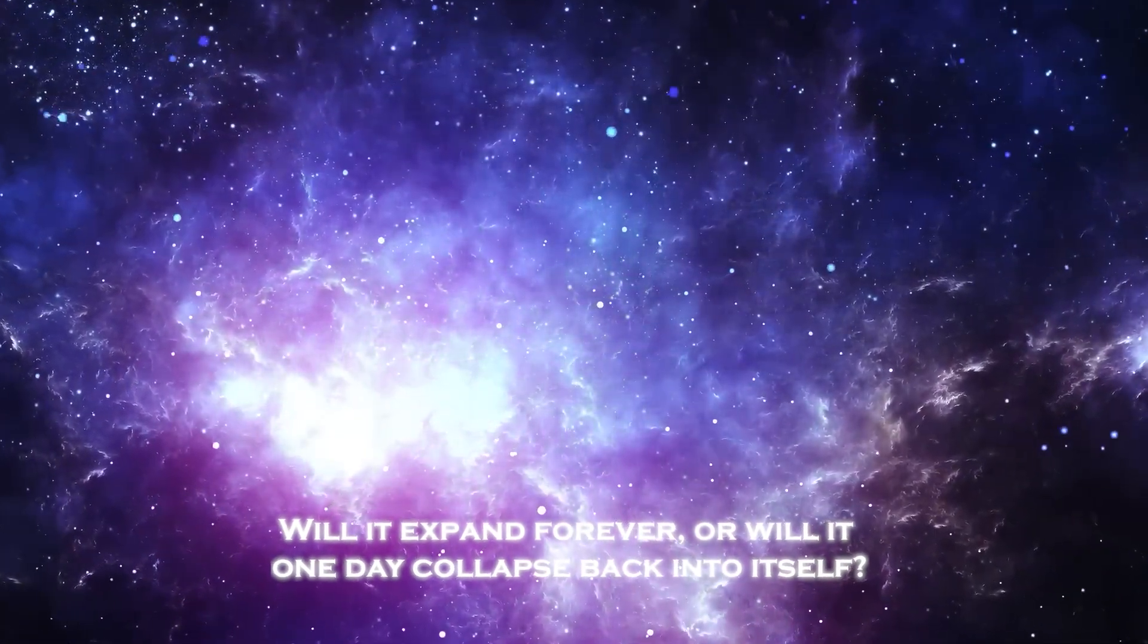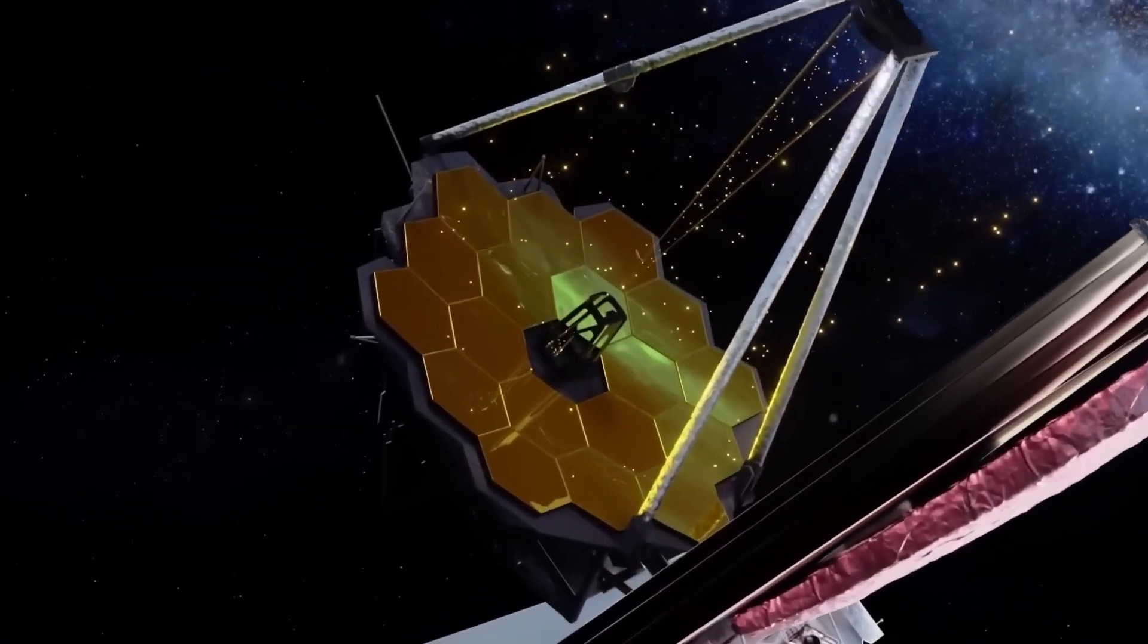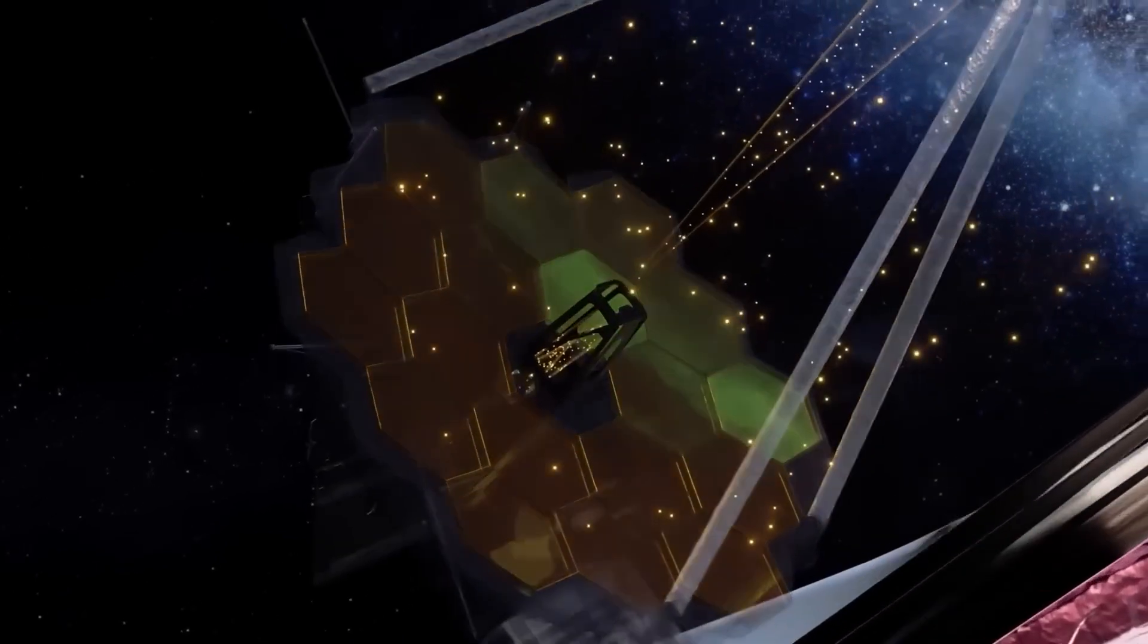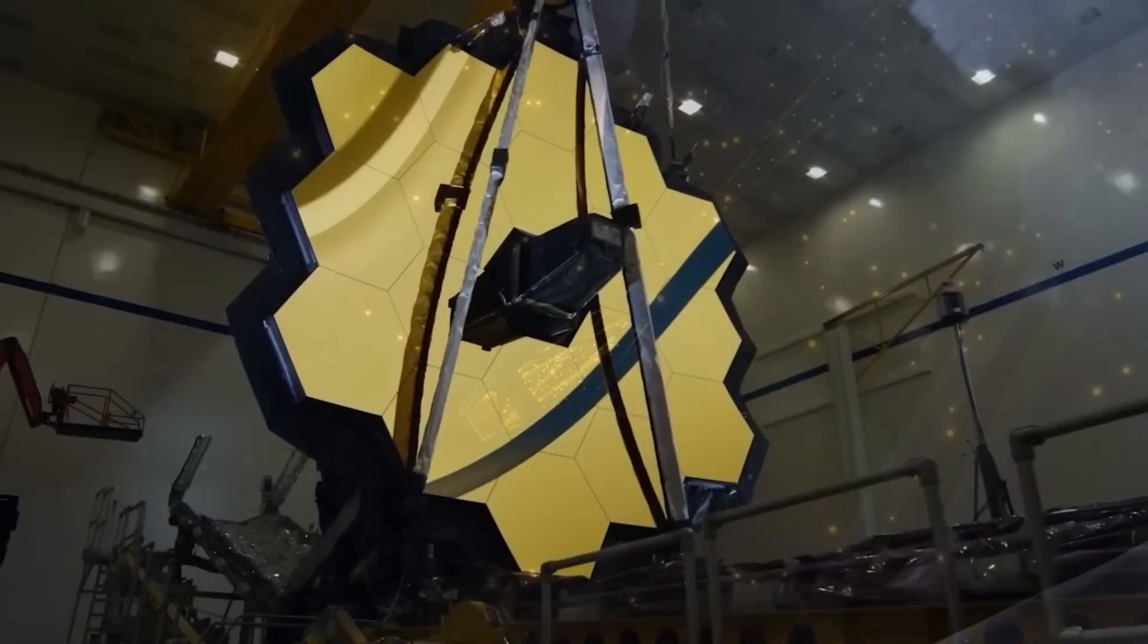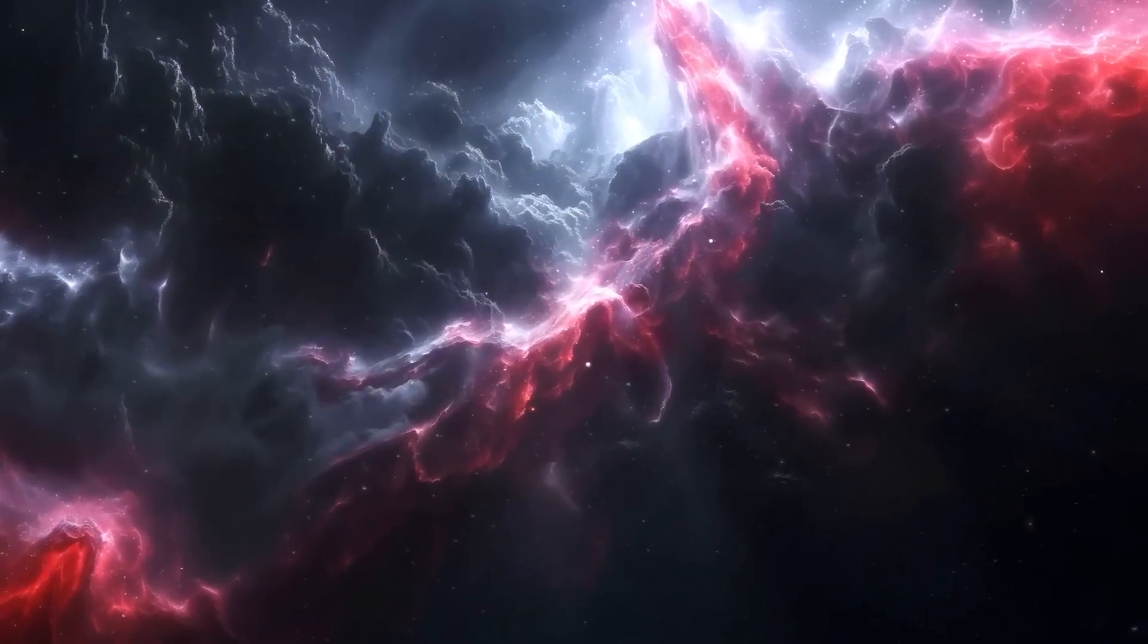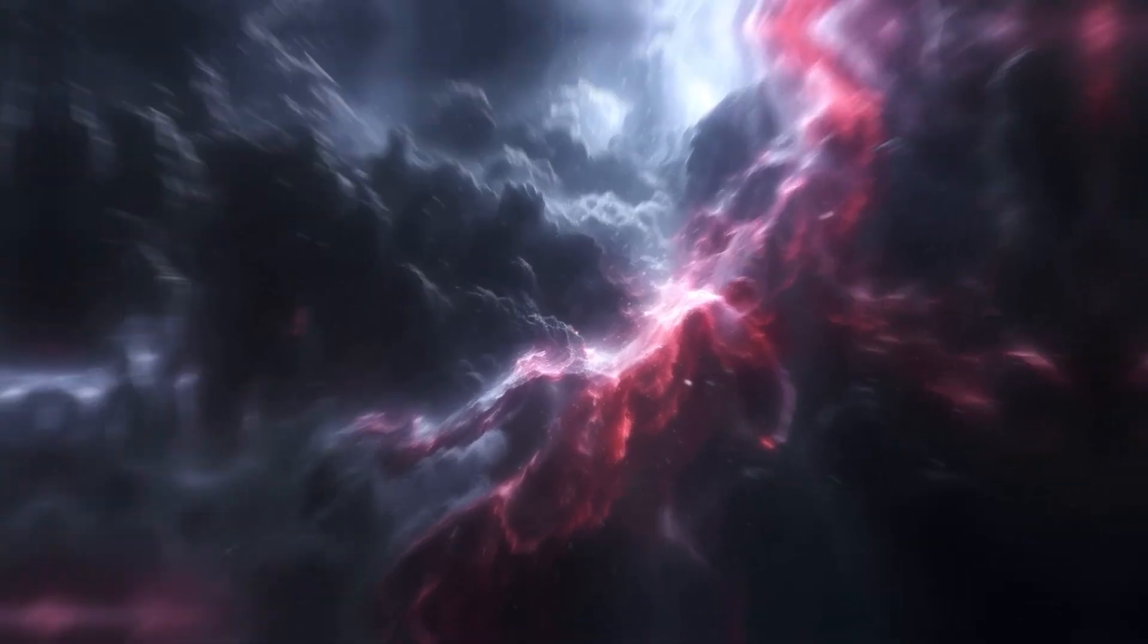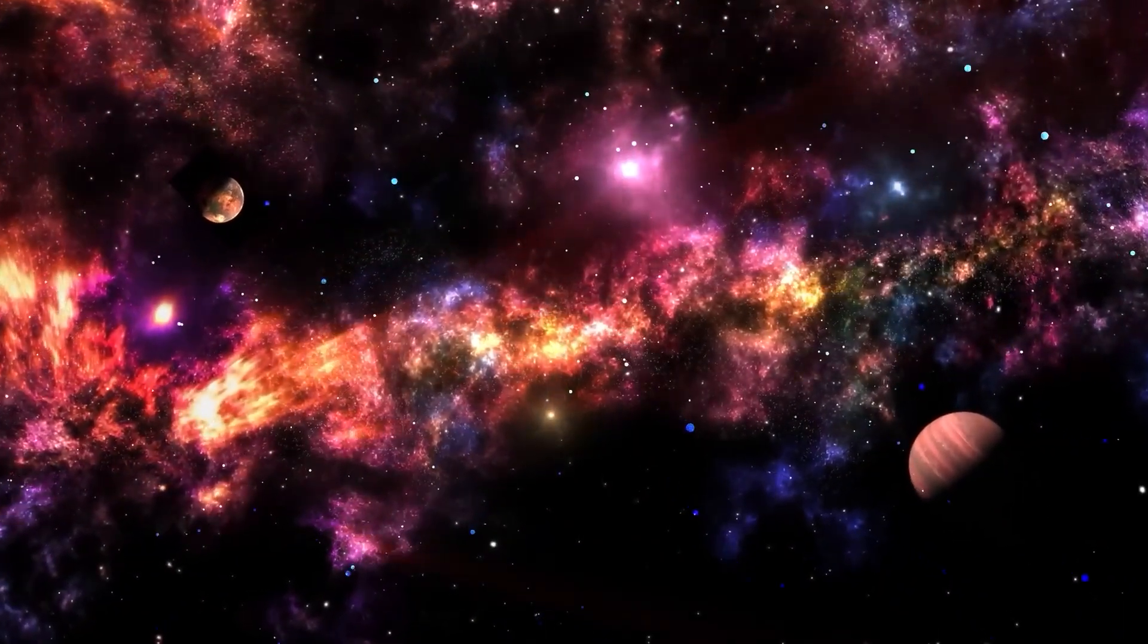One of the James Webb Telescope's primary missions is to uncover the first light objects, galaxies and stars that formed in the initial few hundred million years after the Big Bang. These ancient structures hold the key to understanding the universe's infancy.